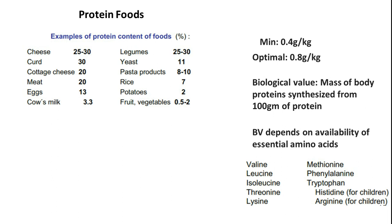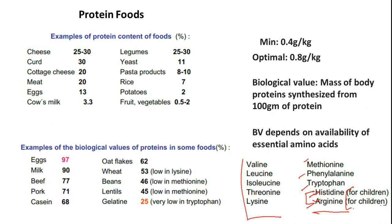Biological value depends on the availability of essential amino acids. The essential amino acids are valine, leucine, isoleucine, threonine, lysine, methionine, phenylalanine, tryptophan, histidine, and arginine. Histidine and arginine are essential only for children; for adults, they can be synthesized from other amino acids. Comparing biological values across foods, eggs have proteins that can be absorbed and integrated up to 97%, followed by milk, then others.